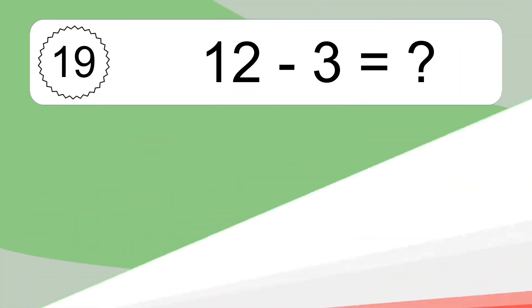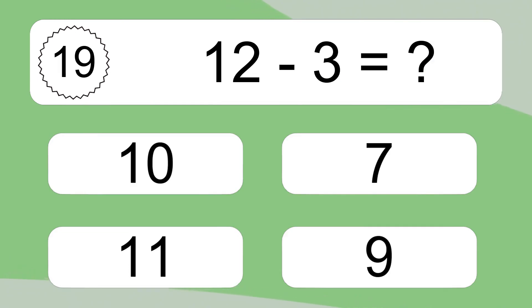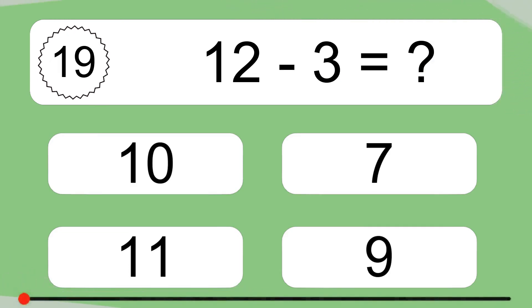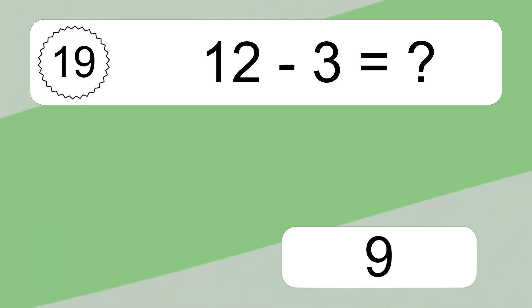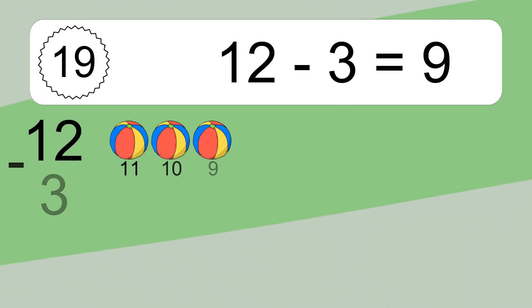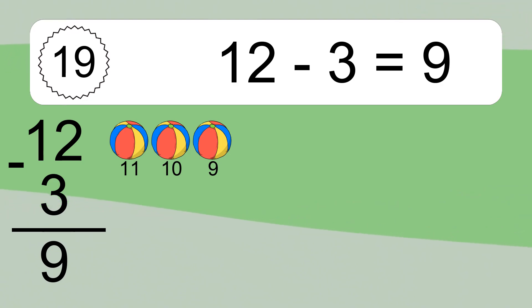12 minus 3 equals what? 12 minus 3 equals 9. Let's count it: 11, 10, 9.